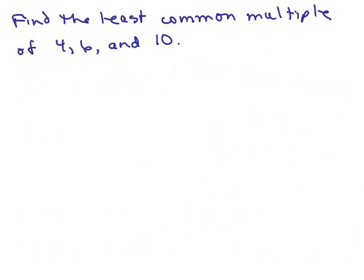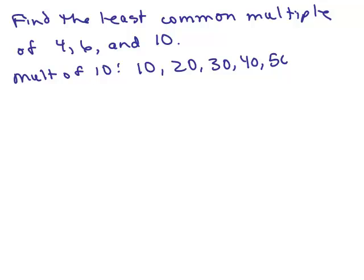You could shorten this process a little bit. For example, find the least common multiple of 4, 6, and 10. What you could do is take the biggest number and list its multiples: 10, 20, 30, 40, 50, 60, 70, and so on. Then check if each multiple is also a multiple of the other numbers. 4 doesn't go into 10. 4 goes into 20, but 6 doesn't. So 20 is not a multiple of both.